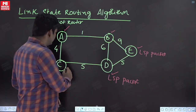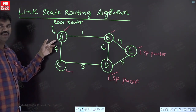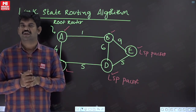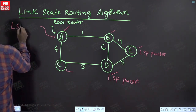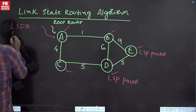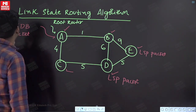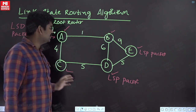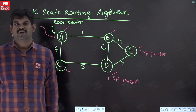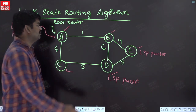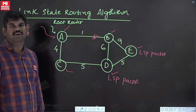When every router gives its LSP packets to router A, A now has complete global information. That global information is called the LSDB packet — Link State Database packet — which it is going to generate. This LSDB packet contains complete information of the network: number of routers, number of links which are up and which are down. In distance vector, when a link is broken you got count to infinity — now let us check whether we get that problem here.